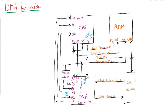After getting control of the bus, the DMA controller will start the read/write operation. We need to remember that whenever the value of bus grant is zero, communication will be between the CPU and DMA. Whenever the value of bus grant is one, the read/write operation will be between the DMA, RAM, and the IO device.